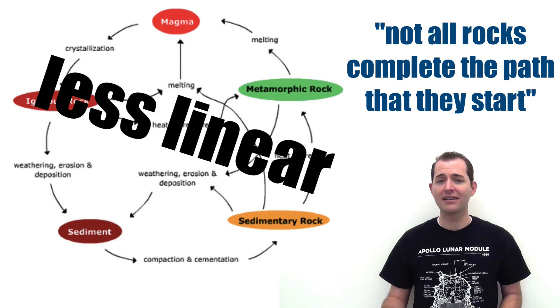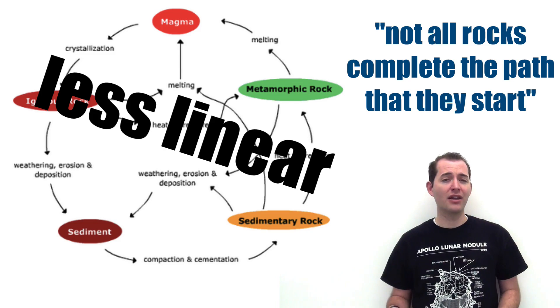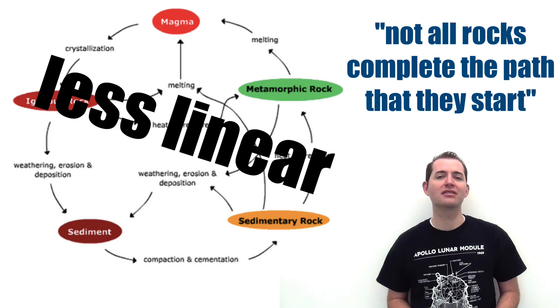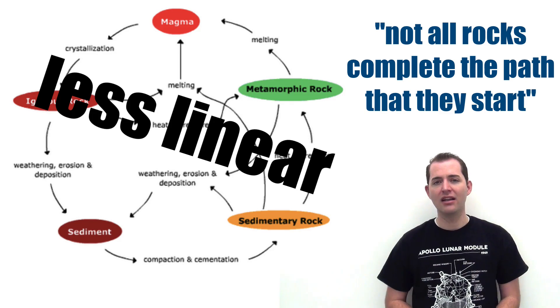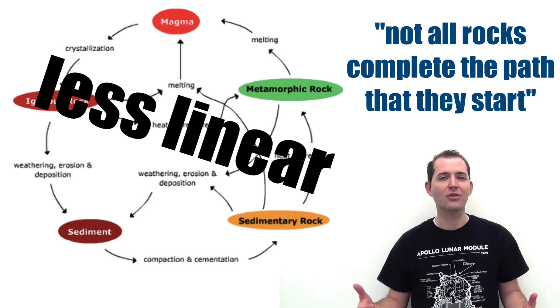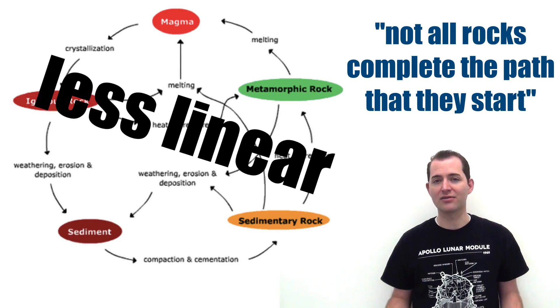Not all rocks complete the path that they start. For example, just because a rock is weathered and eroded and deposited, and seems to be on the path towards a sedimentary rock, does not mean it will make it to become a sedimentary rock. Those deposited pieces or clasts of that rock might be diverted to become an igneous rock.